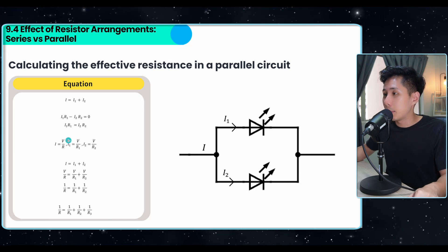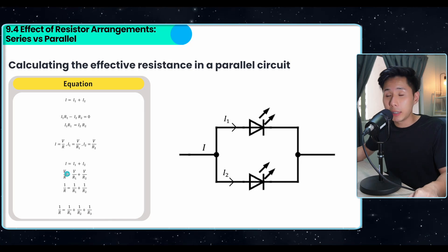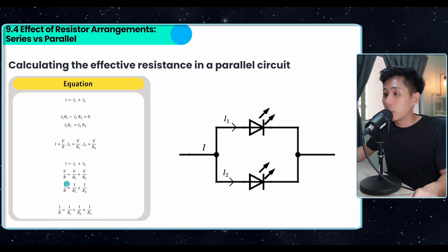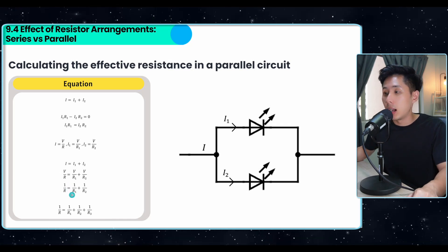And after subbing every value into this equation here, and given that V is the same, we can just cancel it out. And then we will have found out the equation to calculate the effective resistance in a parallel circuit.